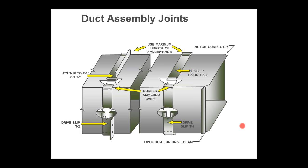Regardless of what type of connection you use on rectangular ductwork, pretty much all of them will have some leakage. It's very hard to have metal pressing against metal and make it really tight. Gasketing and welding help, but both are pretty uncommon. So using mastic is probably the way to go for most of this work.